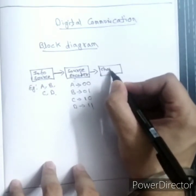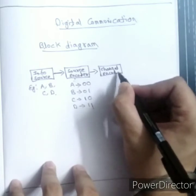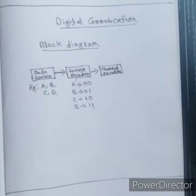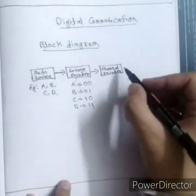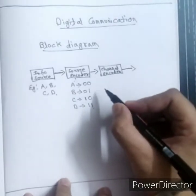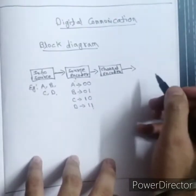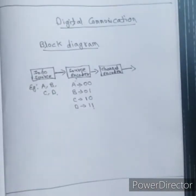The output of the source encoder — the bits — is then passed through a channel encoder. In the channel encoder, we add some redundant bits. By adding those redundant bits, it helps the receiving side to detect errors properly, because when messages flow through the channel there can be errors, and the parity bits added in the channel encoder help detect them at the receiving side.